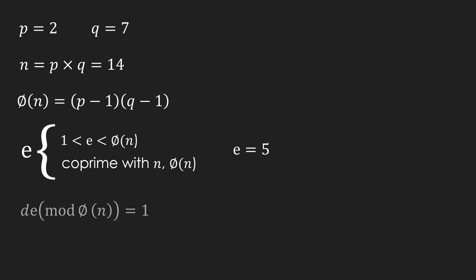The last step is to choose a number d, where d times e mod totient of n should be equal to 1.